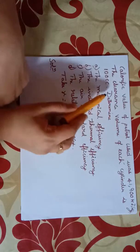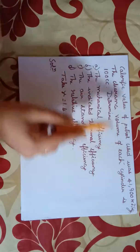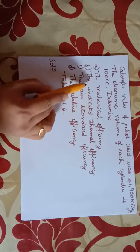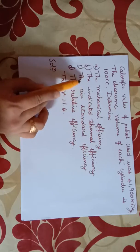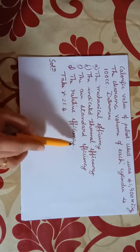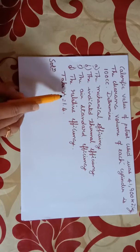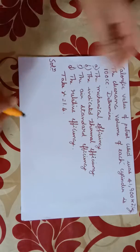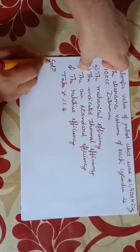The clearance volume of each cylinder is 100 cc. Determine the mechanical efficiency, the indicated thermal efficiency, the air standard efficiency, and the relative efficiency. Take gamma as 1.4. Now we will see the solution.